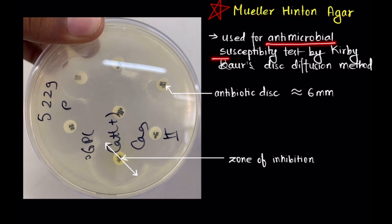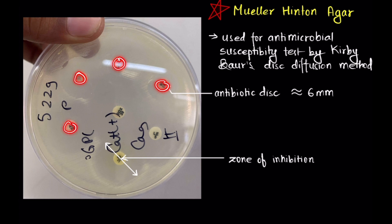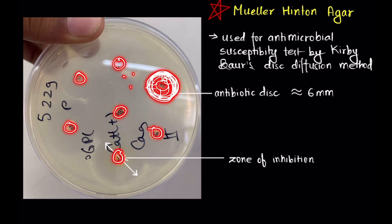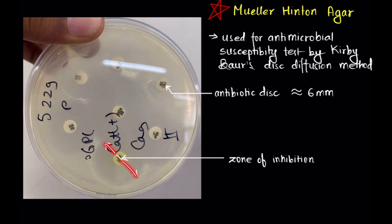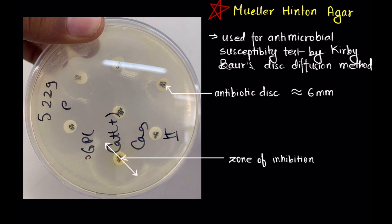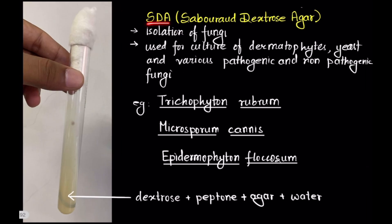Mueller-Hinton agar is used for antimicrobial susceptibility testing by Kirby-Bauer's disc diffusion method. In this method, you take the Mueller-Hinton agar, place antibiotic discs on it, and as the antibiotics diffuse outward, they kill or inhibit the growth of bacteria inoculated on the agar, creating an inhibitory zone. The zone of inhibition indicates that bacterial growth has been inhibited. The size of the antibiotic disc is around 6 millimeters.